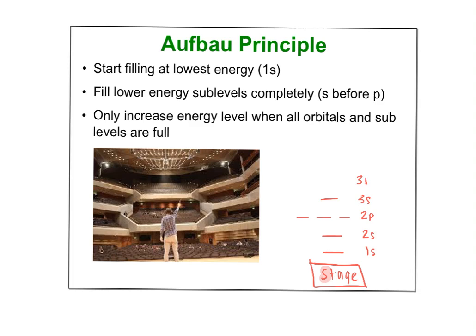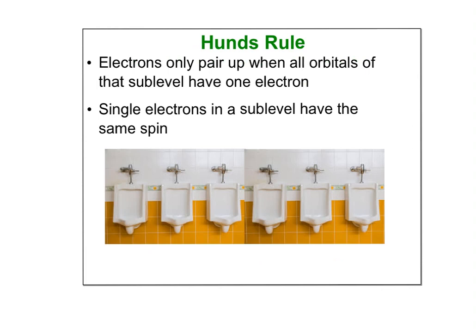Then 2s, then 2p, then 3s, then 3p and so on. If you're an audience member and this is your all-time favorite band, you're going to go straight to the first row and sit in the front. When that row is full, the next people who arrive still want to sit as close as possible — they go to the next row, and then the next. The idea is you get as close to the stage as possible at lowest energy, and as we fill up, we move to the next row.